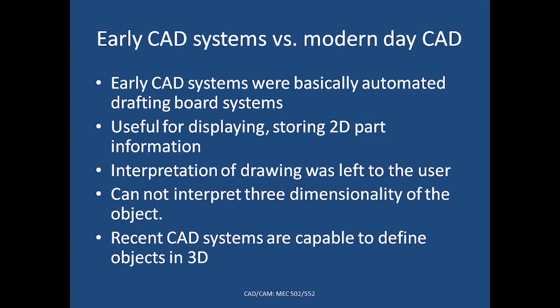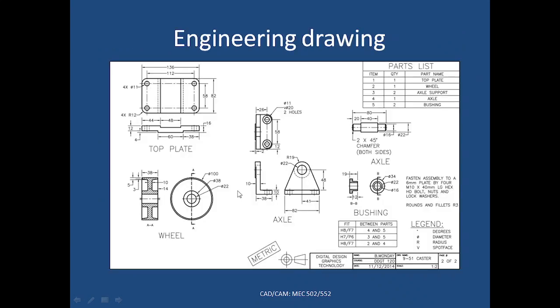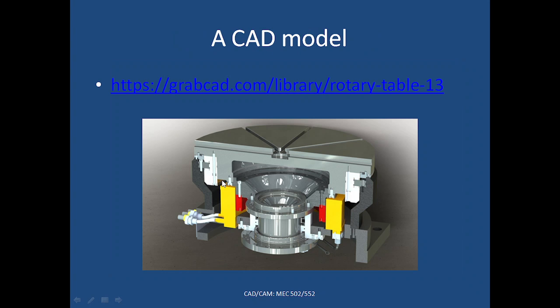Recent CAD systems are capable of defining objects in three dimensions. This engineering drawing depicts five parts which are going to be used for making an assembly. In comparison, a CAD model has all the information about the different parts. You can manipulate that information — you can rotate it, have a section view, see inner details, and even generate the drawing for each and every part as well as the assembly of the CAD model.